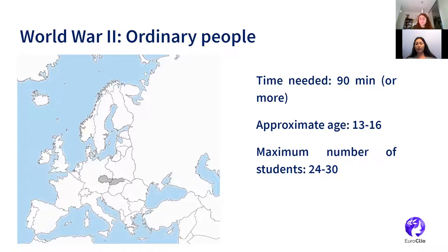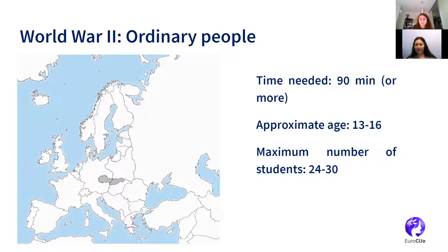The optimal number of students for organizing the activities in this lesson plan is 24 to 30, although all activities can be adjusted to the real number of students. The main aim of the lesson plan is to help students engage with the complexity and differences in everyday life of ordinary people in Europe during the Second World War, from 1939 to 1945.